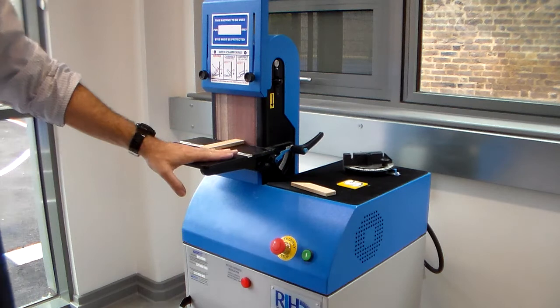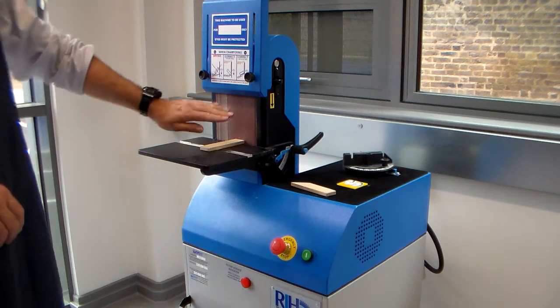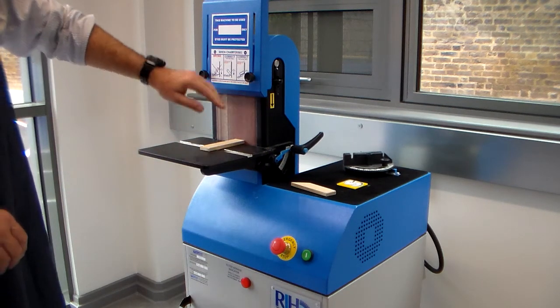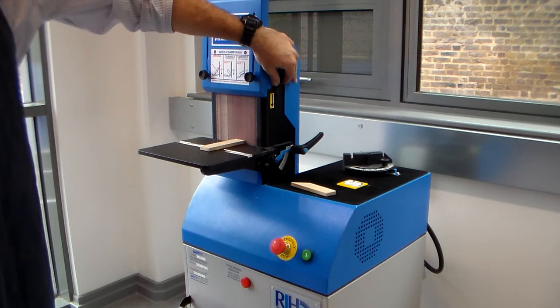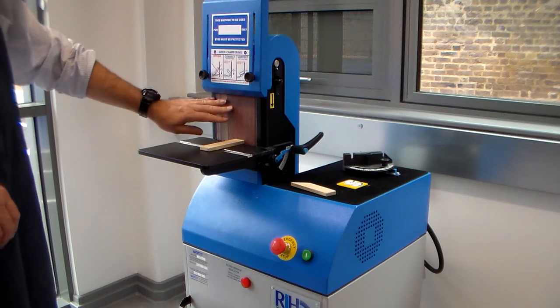This part here is called the table. Here is the belt, which we saw moving around earlier. Here we have a roller and a tensioner to tension the belt and keep it from slipping.